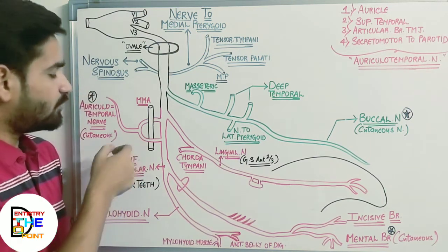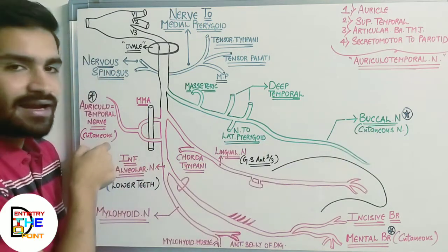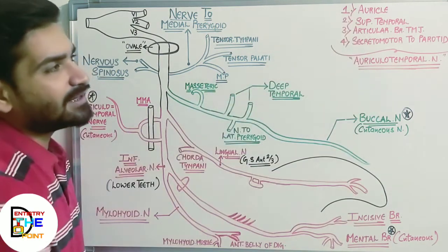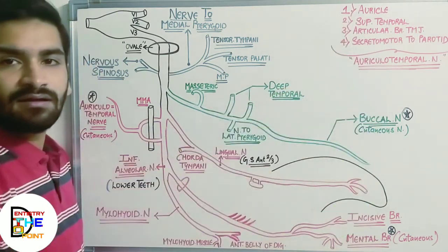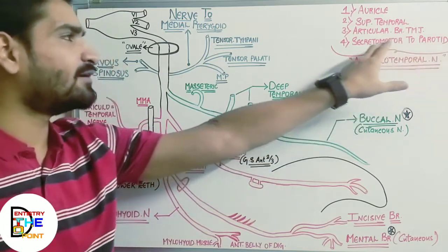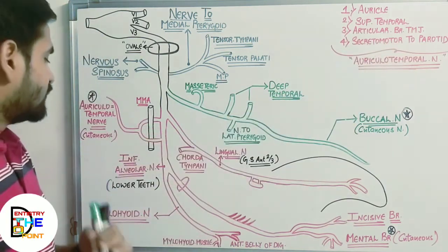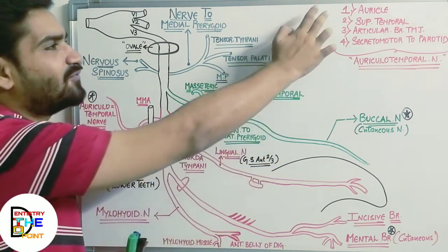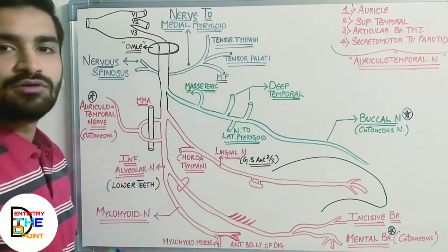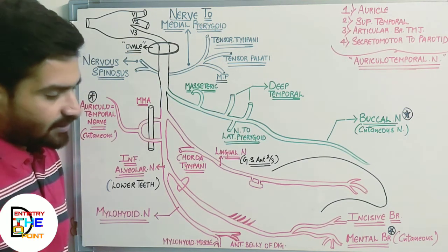The second branch of the posterior division is the auriculotemporal nerve, which is a cutaneous branch of the mandibular nerve. The auriculotemporal nerve supplies four areas: the auricular region, the superficial temporal region, an articular branch to the temporomandibular joint, and secretomotor fibers to the parotid gland. The secretomotor function means it provides stimulus for the parotid gland to secrete saliva.